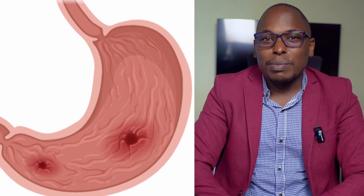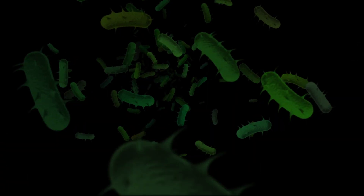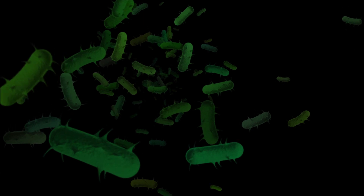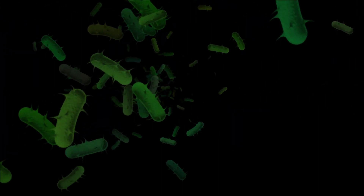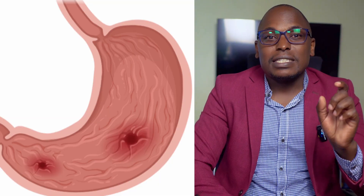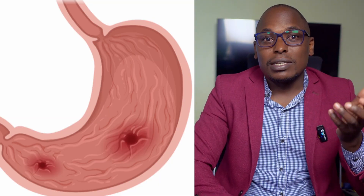Stomach ulcers are mainly caused by a bacteria that we call H. pylori, which affects the majority of the people on this planet, because around 50 to 75 percent are infected by this bacteria. But only a handful, 25 percent, get the actual stomach ulcers, what we usually call PUD, which is peptic ulcer disease.